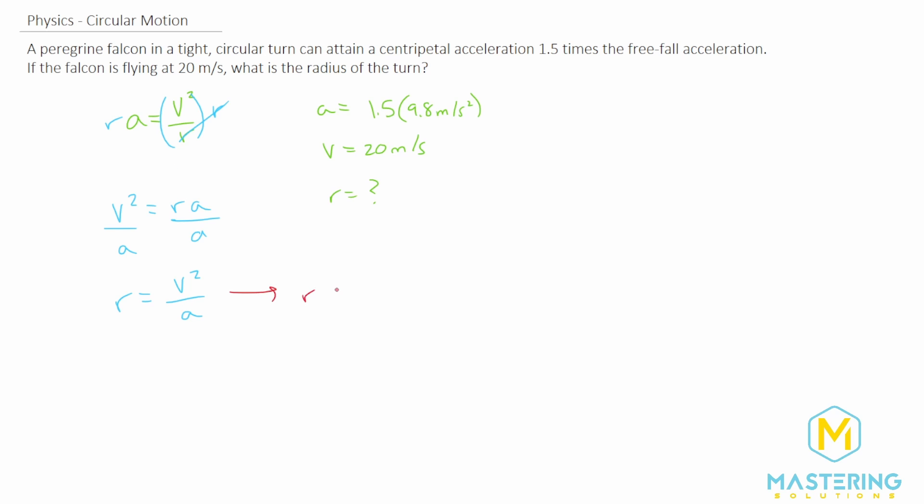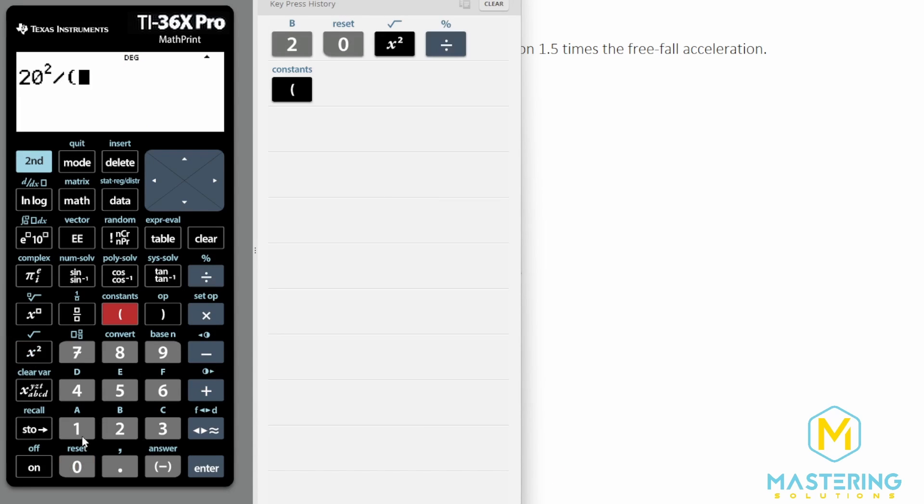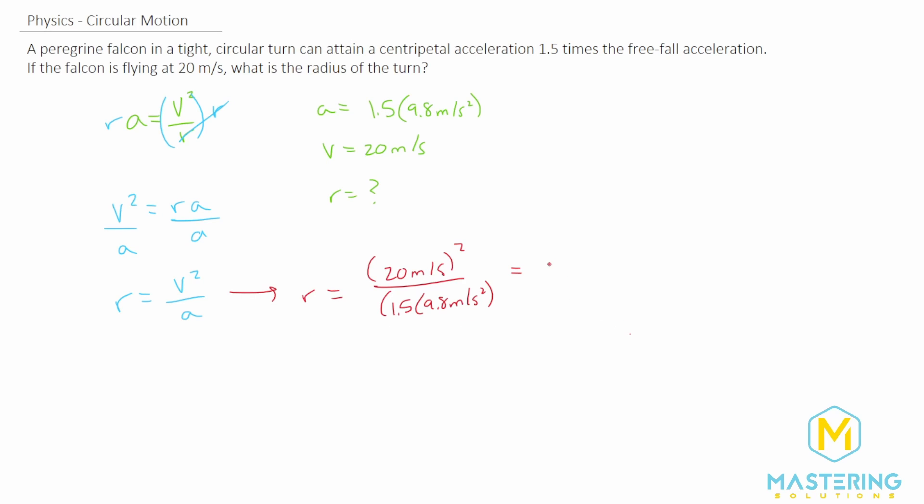Now when we plug in the numbers to figure out what the radius of the turn is, we have the velocity, which we said is 20 meters per second, and that's squared, divided by the acceleration, which is 1.5 times 9.8 meters per second squared. 20 squared divided by 1.5 times 9.8 gives us 27.2, so round that to 27 meters is the radius of the turn for the peregrine falcon as it's diving.